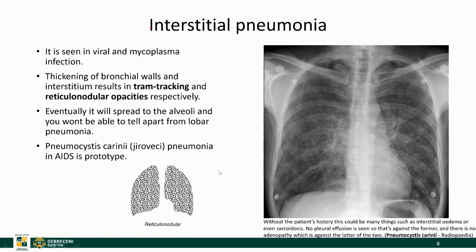Interstitial pneumonias are usually caused by viral or mycoplasma pneumonia — these are the atypical pneumonias. What you will see on the chest x-ray is a reticular pattern, similar to what we saw with lymphangitic carcinomatosis, though that was more localized. We also saw this pattern with cardiac edema, but cardiac edema shows peribronchial cuffing, Kerley lines, pleural effusion, and cardiomegaly — none of which we see here. This might also be caused by sarcoidosis, but sarcoidosis causes bilateral hilar lymphadenopathy, which is not apparent here. If we know the patient has AIDS, we would likely suggest this is Pneumocystis carinii pneumonia.